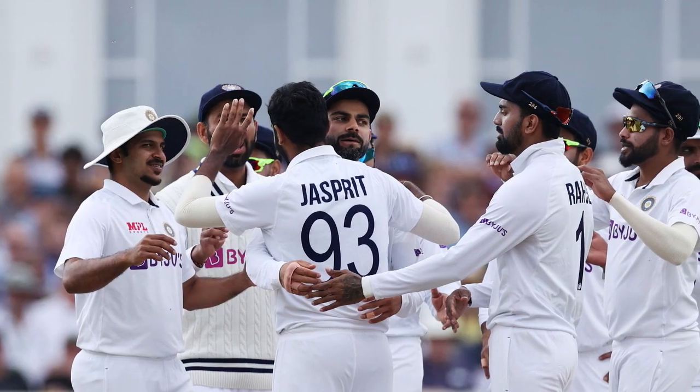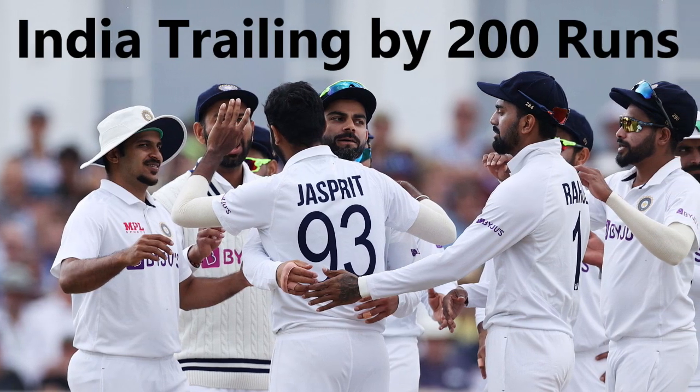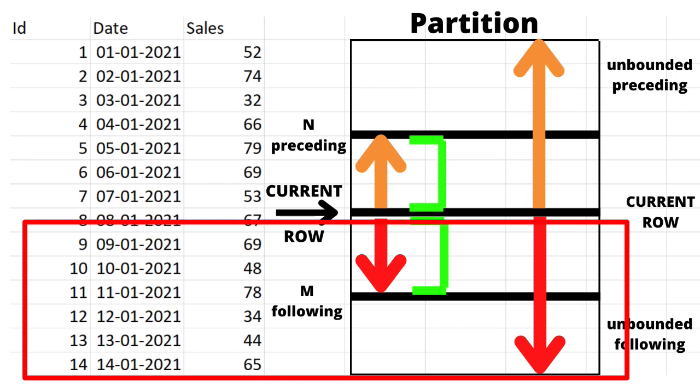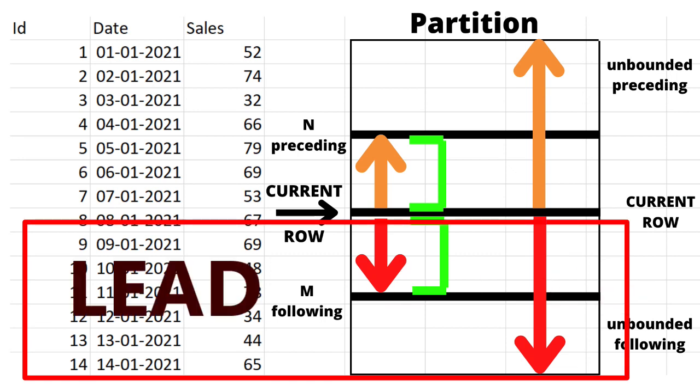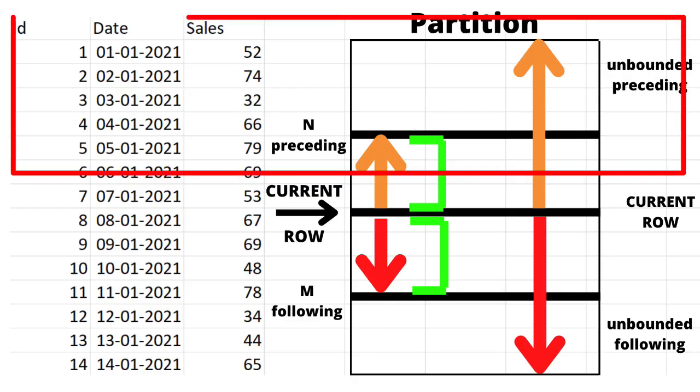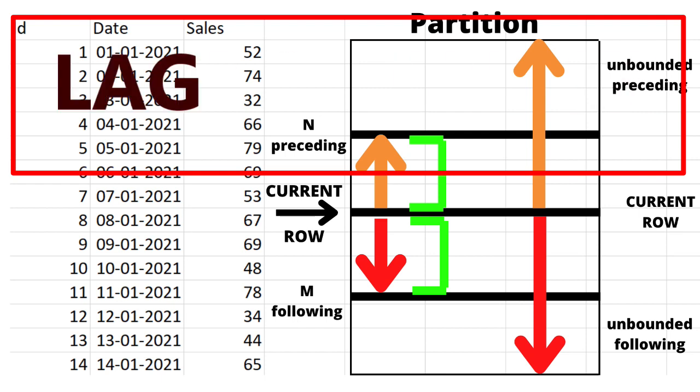Hello everyone. While watching cricket test matches, we often see results like 'India leading by 300 runs' or 'India trailing by 200 runs.' Similarly, in SQL there is the LEAD and LAG function. We use the LEAD function when we need to deal with rows below the current row, and the LAG function when we need to deal with rows above the current row. We'll understand these functions in detail with the help of datasets and SQL Server Management Studio.